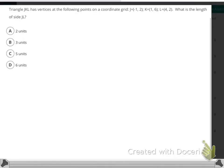Question number 1 says triangle JKL has vertices at the following points of a coordinate grid. J is at (-1, 2), K is at (X, Y), and L is at (4, 2). What are the side lengths of side JL?